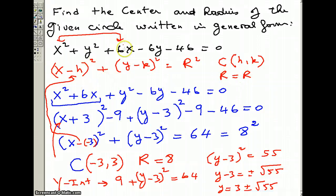Let's start by rearranging. Put the 6x next to the x squared and put the negative 6y next to the y squared and rewrite the general equation in this form.